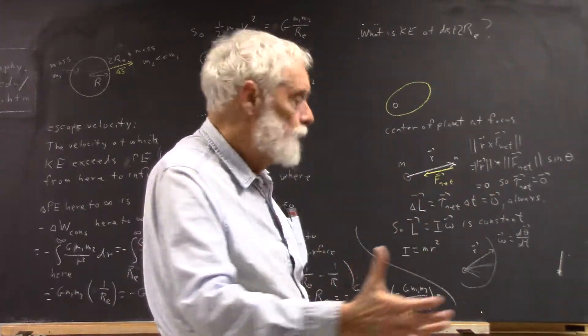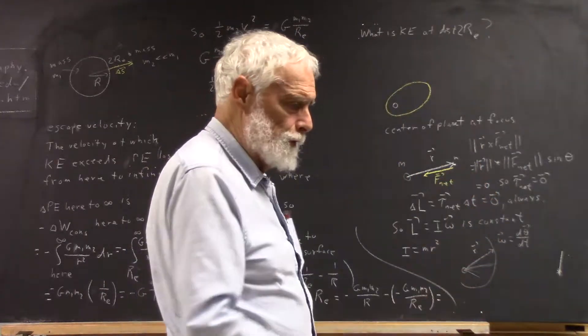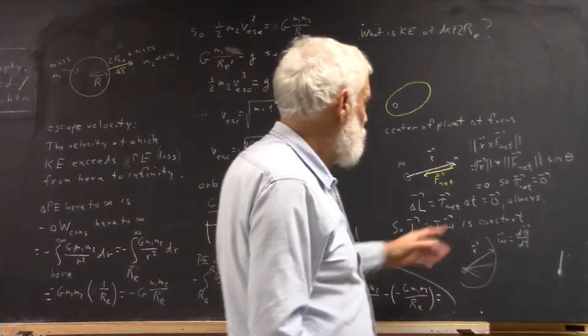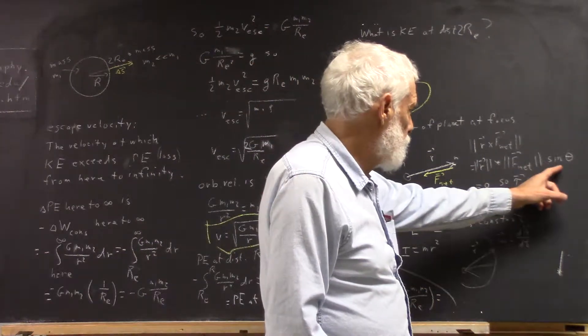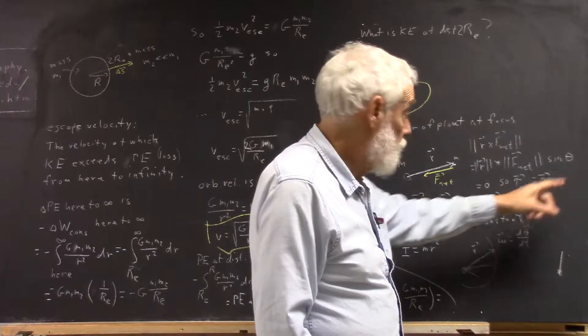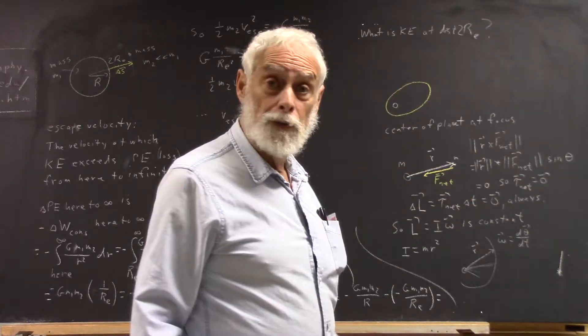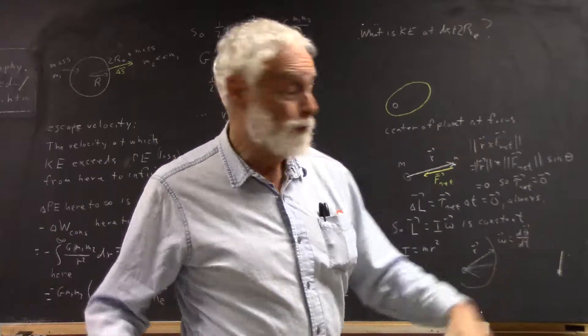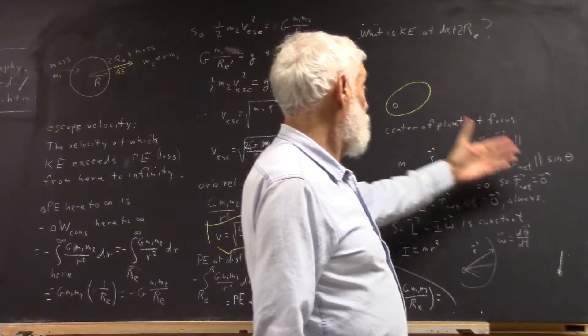You can also consider that the magnitude of the cross product is equal to the product of the magnitudes of the two vectors times the sine of the angle between them. The angle between them is 180 degrees. The sine of 180 degrees is zero. So no matter how you look at it,